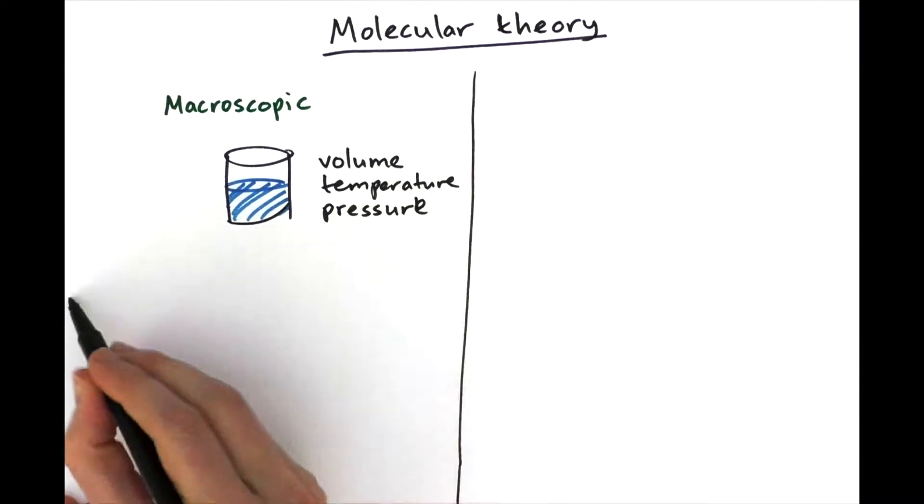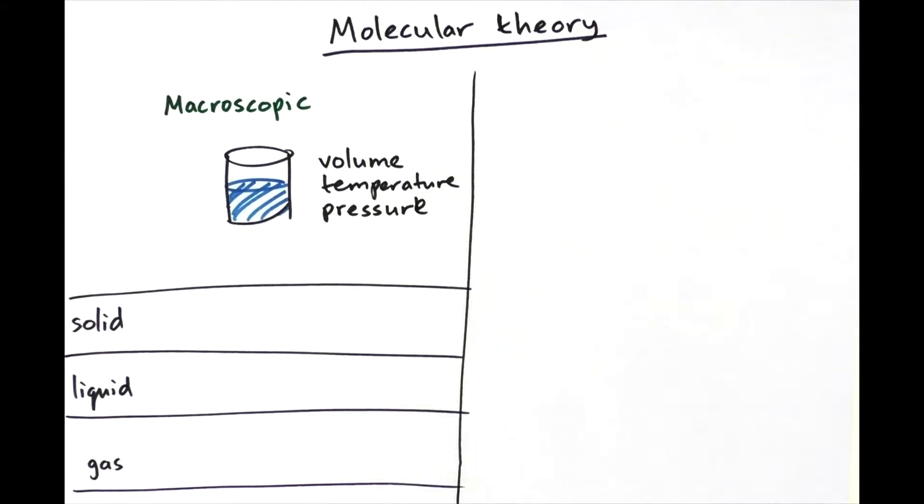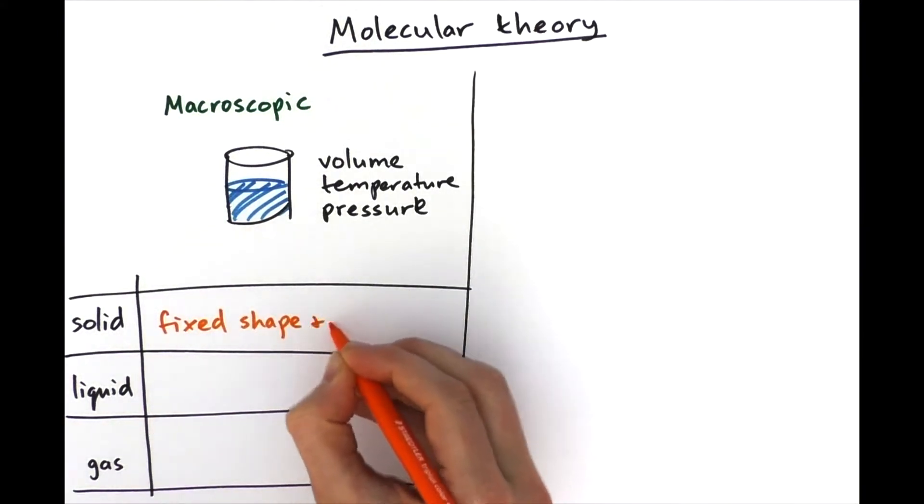So we've got three different phases of water: solid, liquid and gas. And they behave very differently. So if we look at a block of ice, what we see is that it has a fixed volume and a fixed shape.